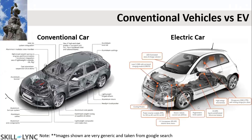Now coming to the conventional vehicle — what is the difference between the conventional vehicle and the electric vehicle? When you look at the differences overall, most of the parts available in the conventional car are similar to the electric vehicle. Then why is it so different? I would like to understand from you what are the major components in a conventional vehicle.